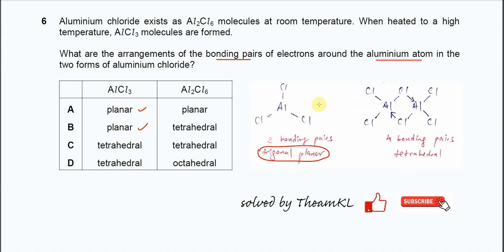It's going to form two dative bonds between the chlorine and aluminum and this chlorine and aluminum and form dimer. As you can see now, the aluminum, it has four bondings.